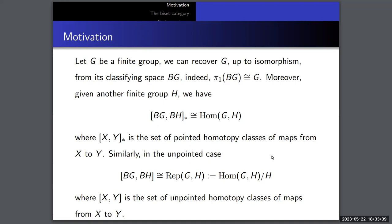Given a finite group G, we can recover G up to isomorphism from its classifying space BG, since the fundamental group of BG is isomorphic to G. The set of pointed homotopy classes of maps from BG to BH can be identified with homomorphisms from G to H. The set of unpointed homotopy classes of maps from BG to BH can be identified with representations from G to H — a quotient of homomorphisms from G to H where H acts by conjugation.